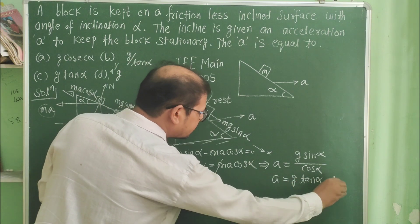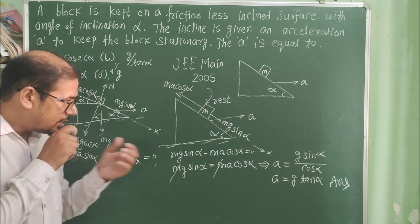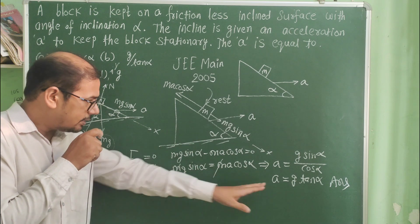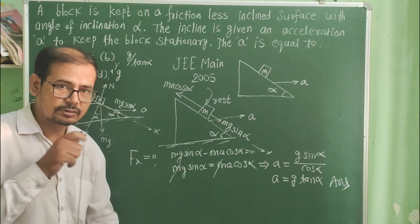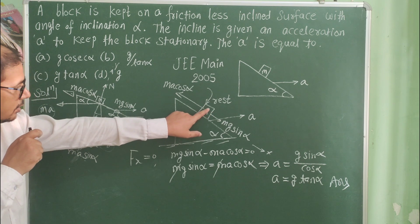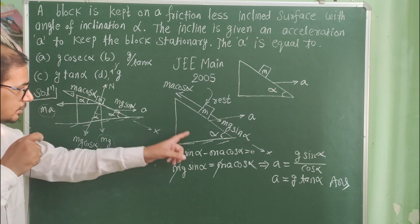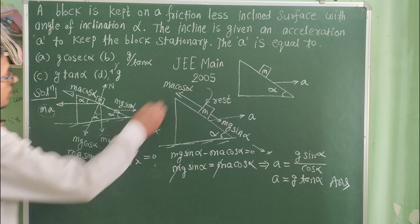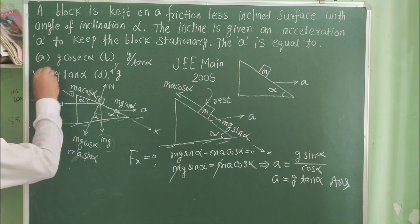This is the answer. If the acceleration of the inclined plane equals g tan alpha, then the block will be at rest with respect to the inclined plane. So a equals g tan alpha.